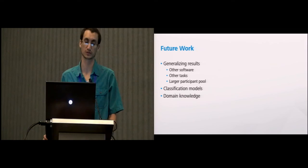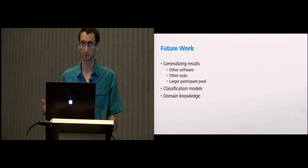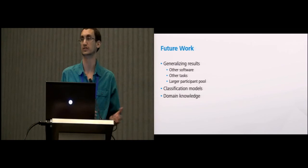For future work, we'd like to generalize the results obviously beyond AutoCAD because the study was restricted to that, and also look at other types of tasks, larger participant pools. By going to larger participant pools we can start to build machine learning classification models that could apply some of this knowledge. We'd also like to look at this issue of domain knowledge: what do people know about not necessarily the software but the domain? In the case of AutoCAD, it would be architecture. With that, I'll wrap up and take any questions. Thank you.